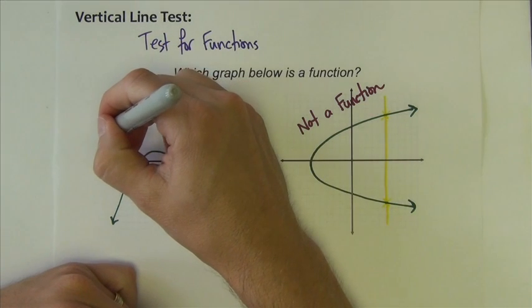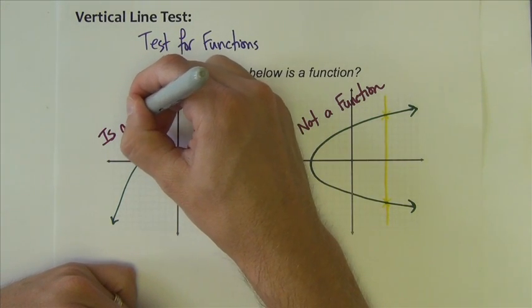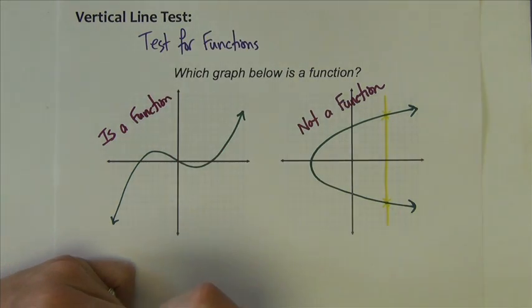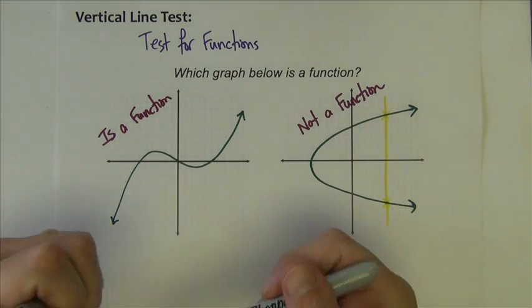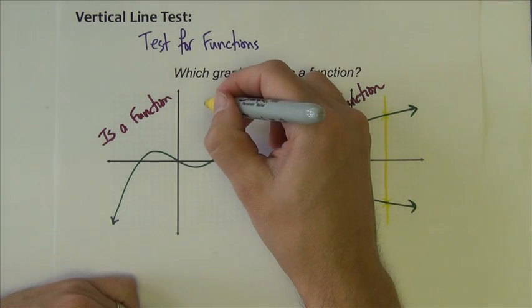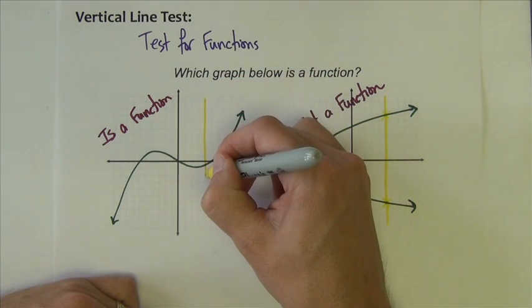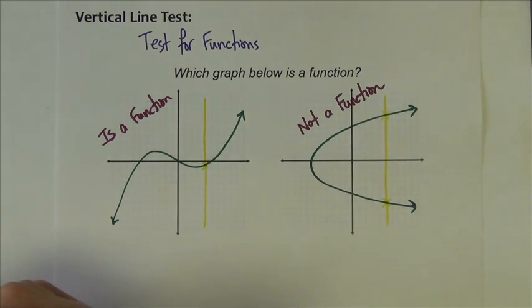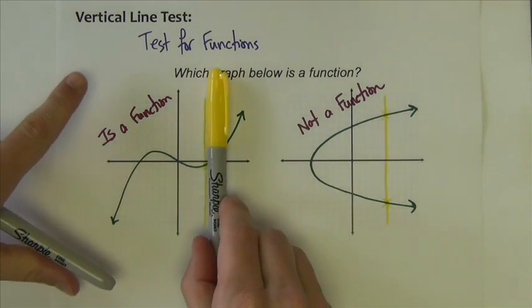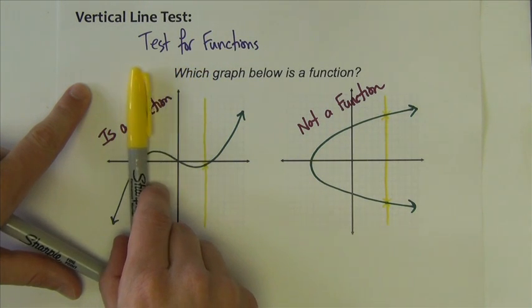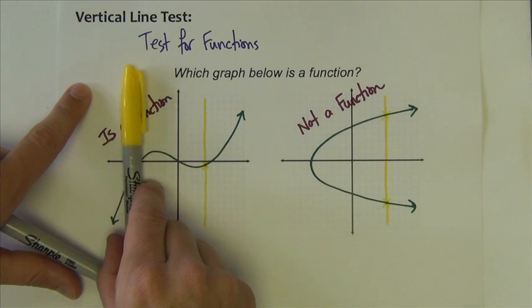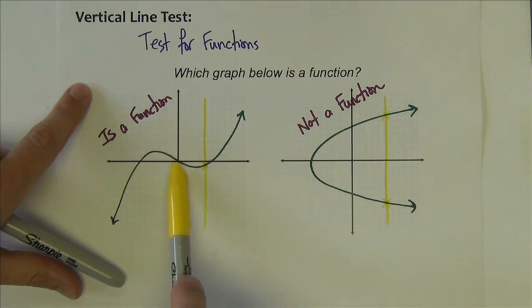This one over here is a function. It's because if I take a vertical line here, it only hits the graph one time. Now, if I take that vertical line, if I could physically move it left and right, you see that never do I hit my graph that I drew more than once. Therefore, this passes the vertical line test. This is a function.